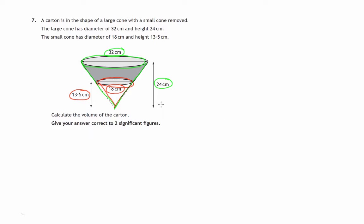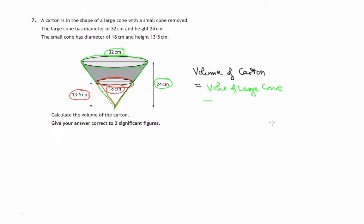Let's look at strategy first. To find the volume of that carton, we'll find the volume of the large cone and take away the volume of the small cone. It's always good to give a clear indication of what your strategy is. So the volume of the carton will be equal to the volume of the large cone minus the volume of the small cone.